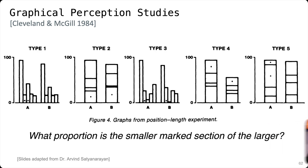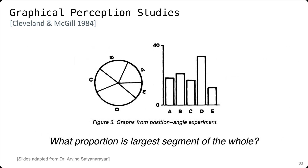It was one of the first studies to systematically evaluate how things like position or area are easier or harder for us to perceive. They showed people visualizations and asked questions like, what proportion is the smaller mark section to the larger? This was from 1984. They asked people how much smaller is this one than this one, evaluating how effectively people could make those judgments for different types of encodings. The important difference tested was bars aligned on the same base close together, aligned on the same base but further apart, separated by other bars, or not aligned on the same base at all.